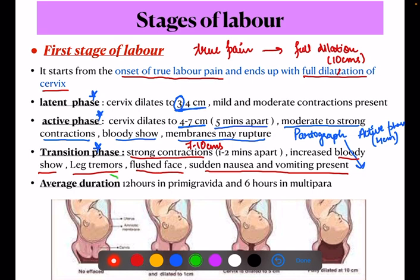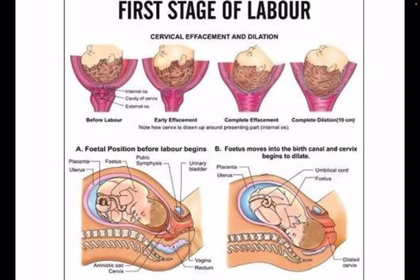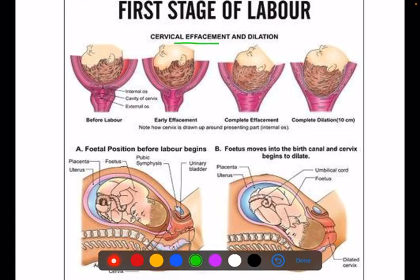First stage starts from true labor pains till full dilatation, and has a latent phase, active phase, and transition phase. The average duration is 12 hours in a primigravida and 6 hours in a multipara. During the first stage, cervical effacement and dilatation — taking up and opening of the cervix — occurs.